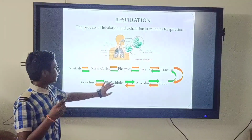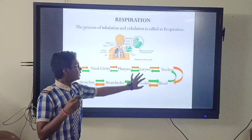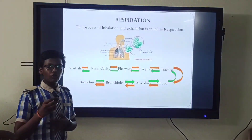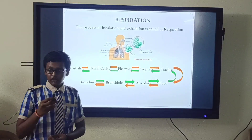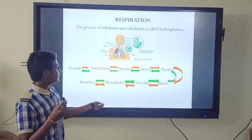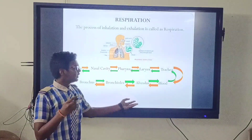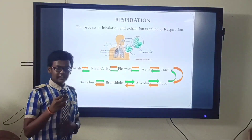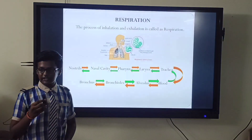Next, air enters into the larynx. When air passes out of our lungs and over the vocal cords, it makes them vibrate. Next, air enters into the trachea, which is a windpipe and has a tubular structure.